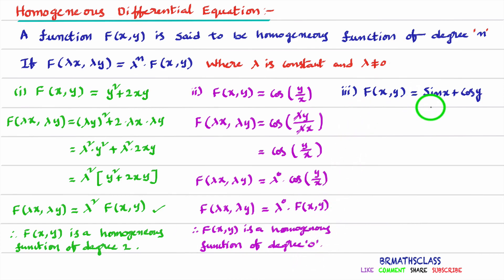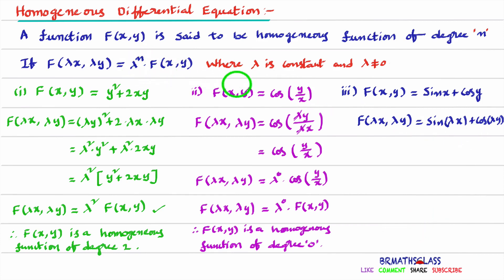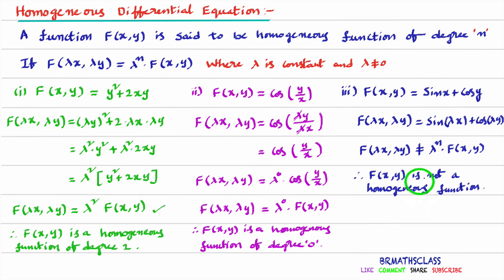Now observe the third example. Calculate f(λx, λy) by replacing x with λx and y with λy, giving sin(λx + λy)·cos(λy). We cannot write this expression in the form λⁿ·f(x, y). Therefore, f(x, y) is not a Homogeneous Function.